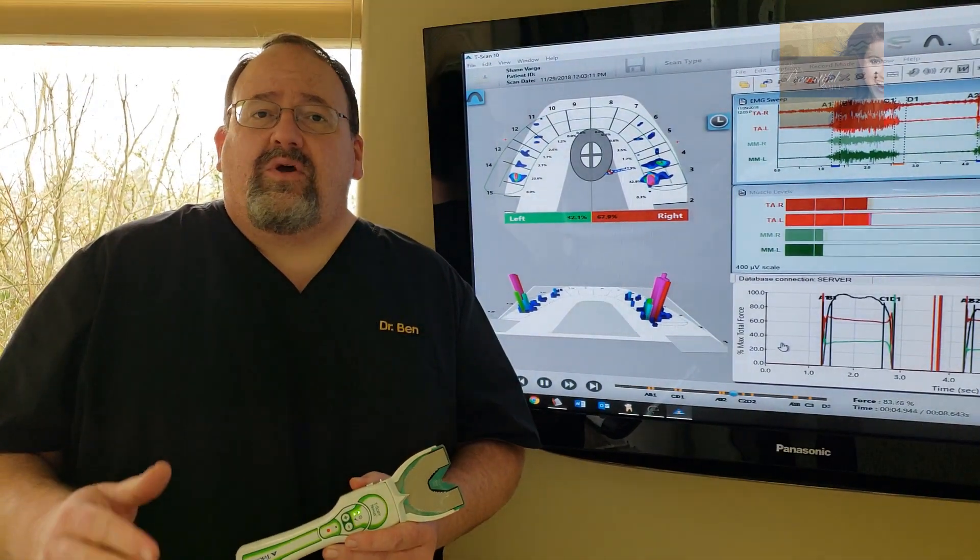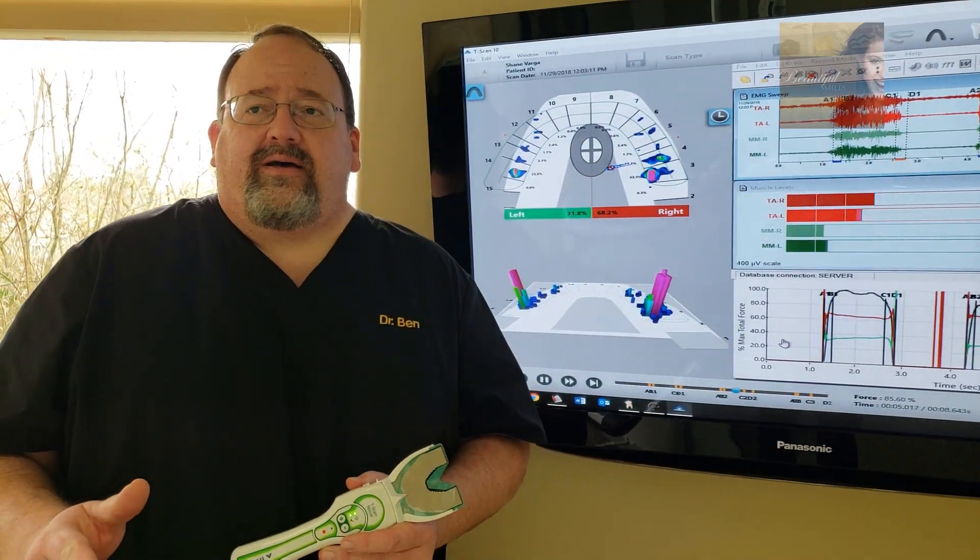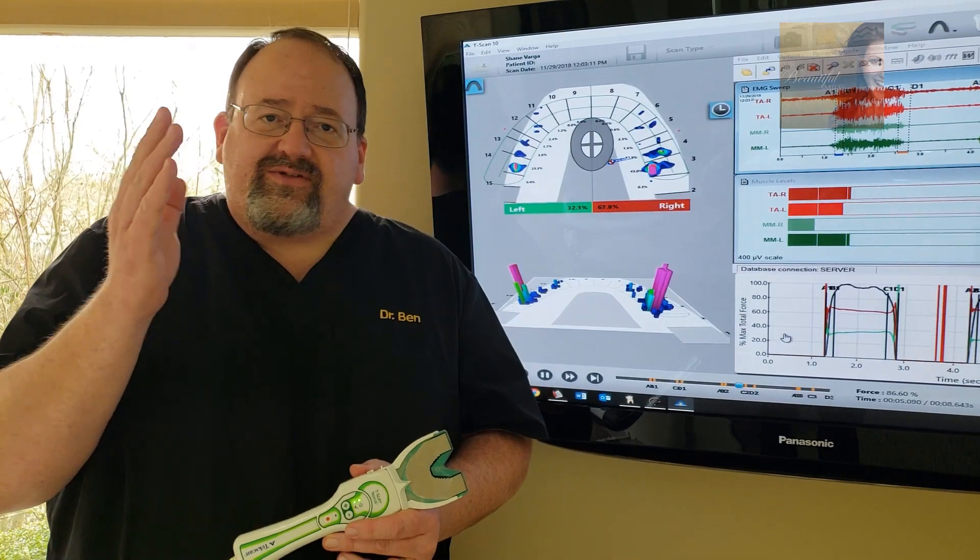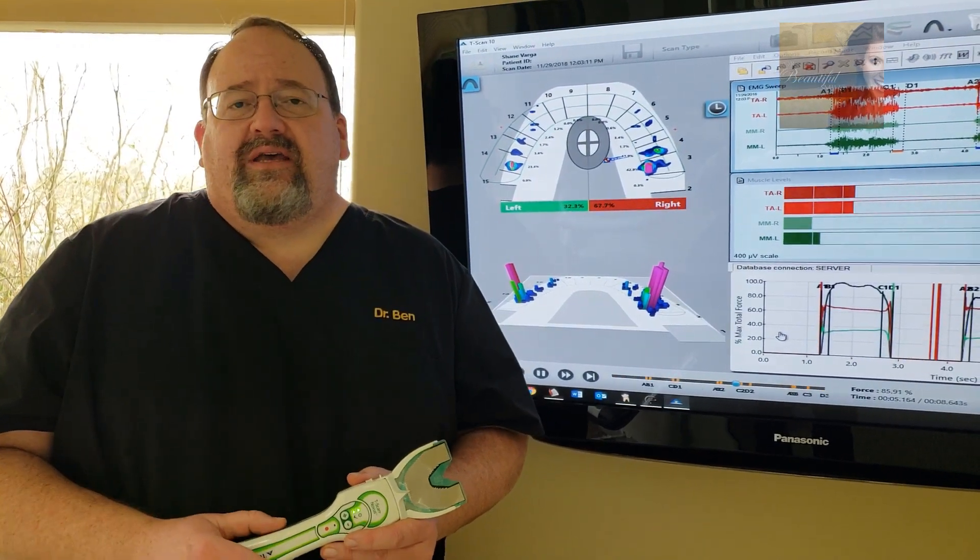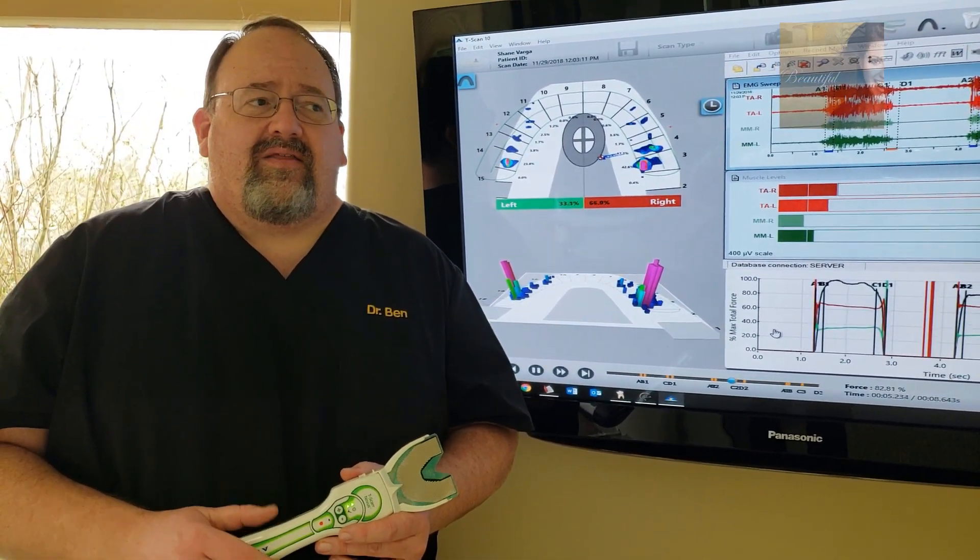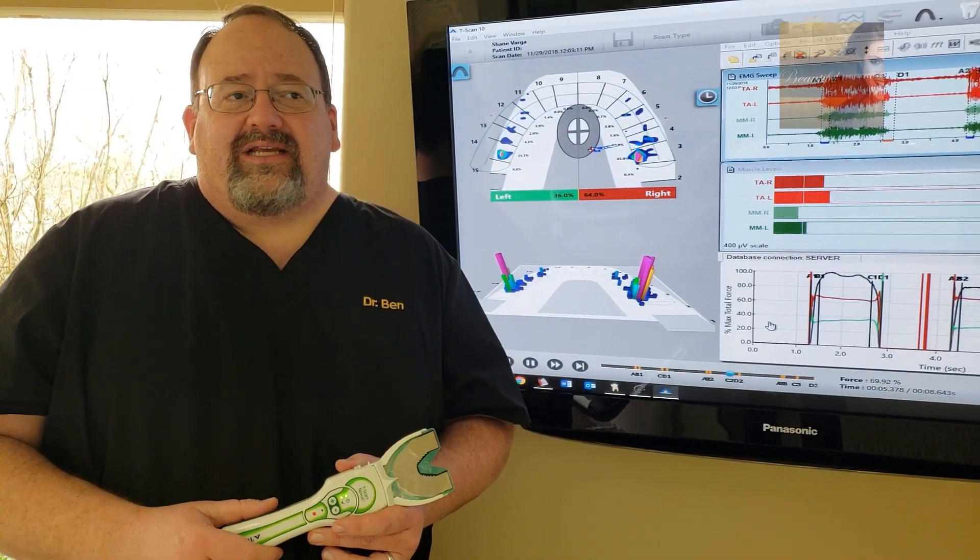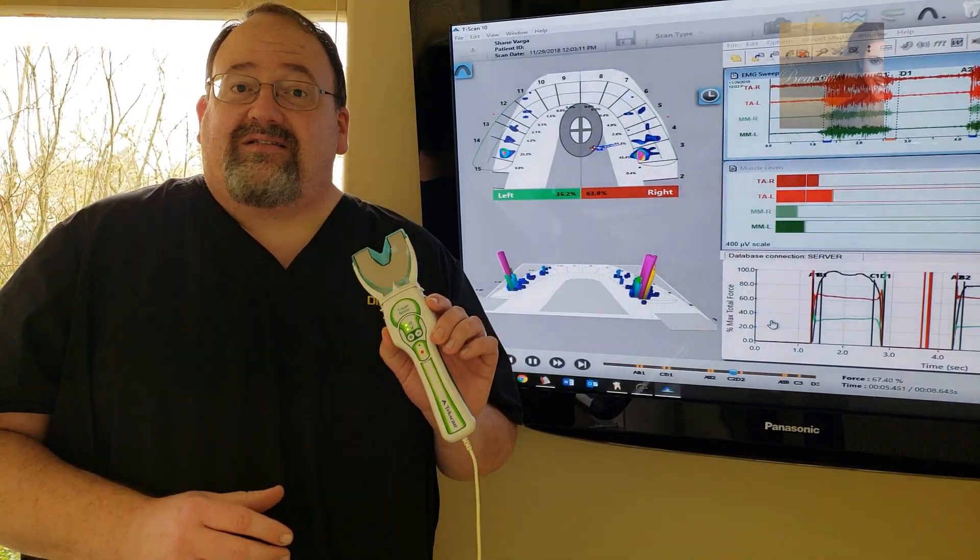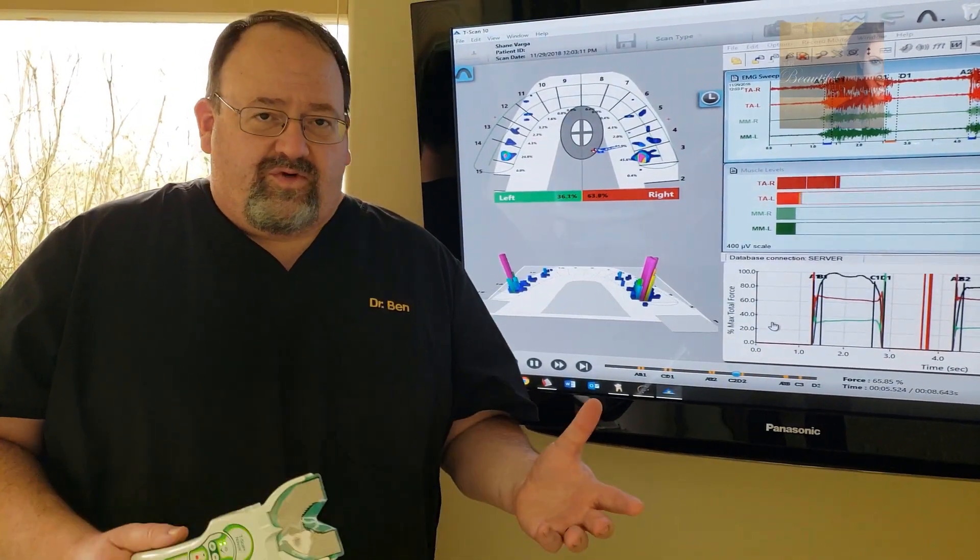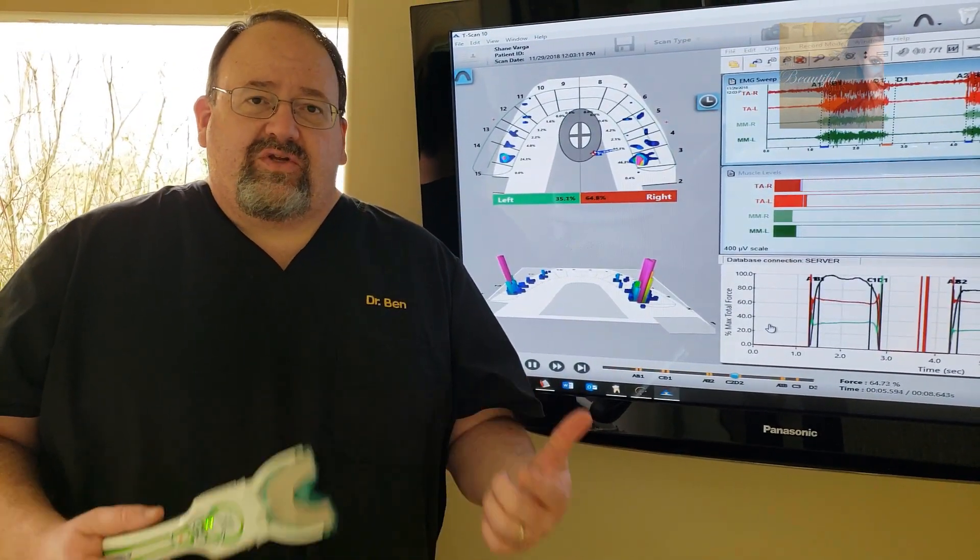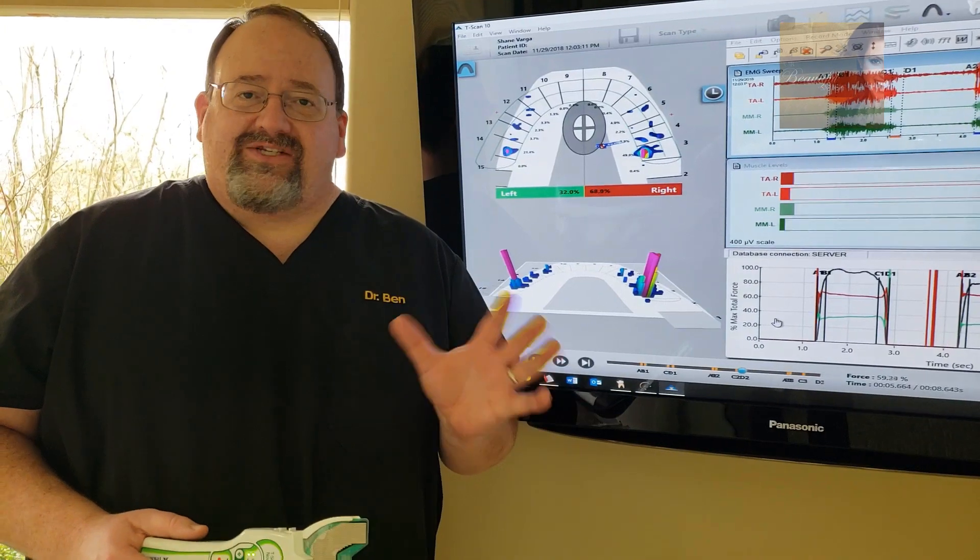So another way to use this is on finishing cases for cosmetics, full mouth rehabs, ortho cases. That rebound that so many orthodontists talk about as far as the stretching of the periodontal ligament or orthodontic settling, it's a problem with bite force and balance. So it's good to control those forces before the braces actually come off and you'll have a lot less tooth movement.